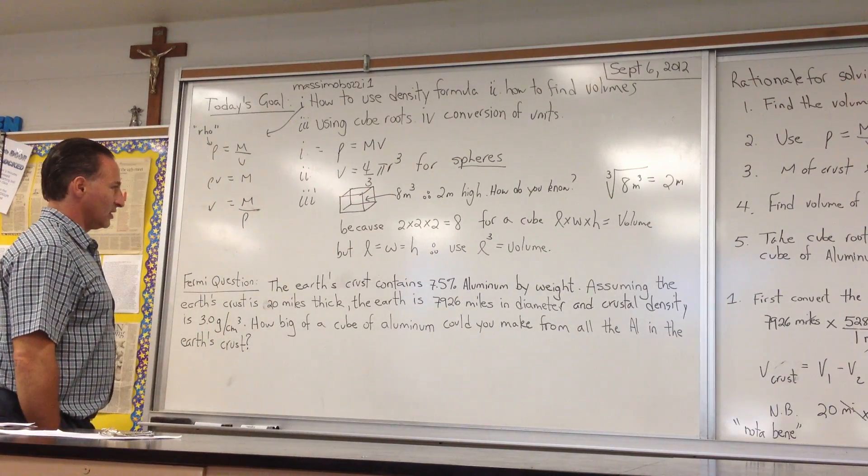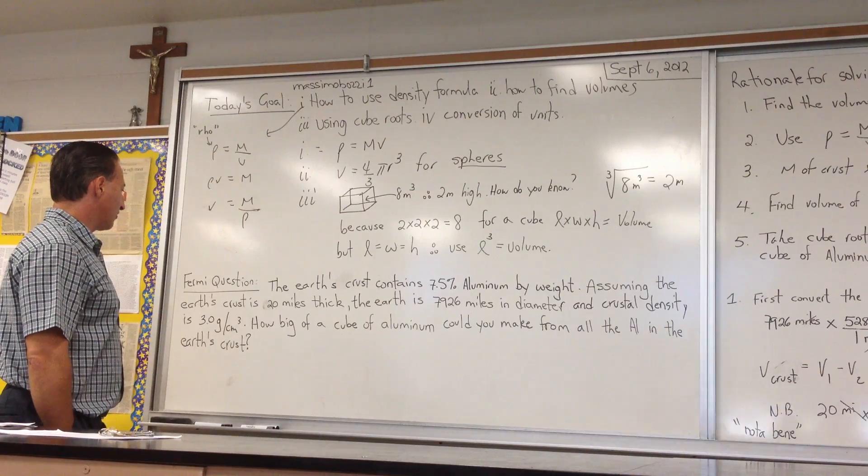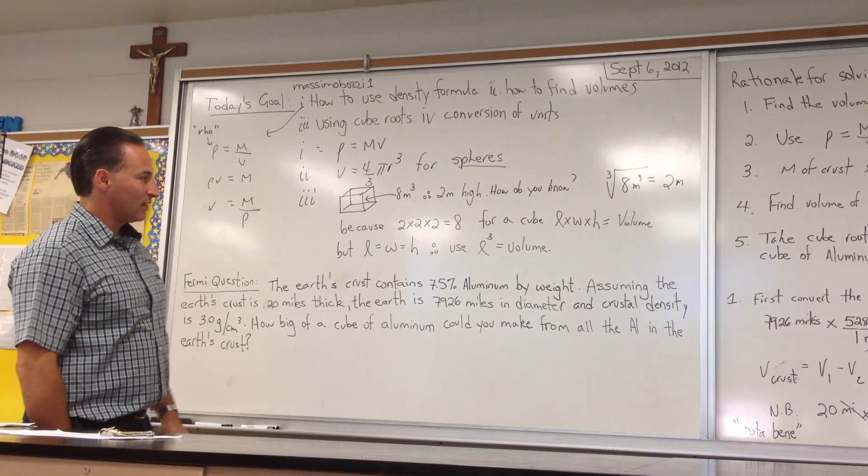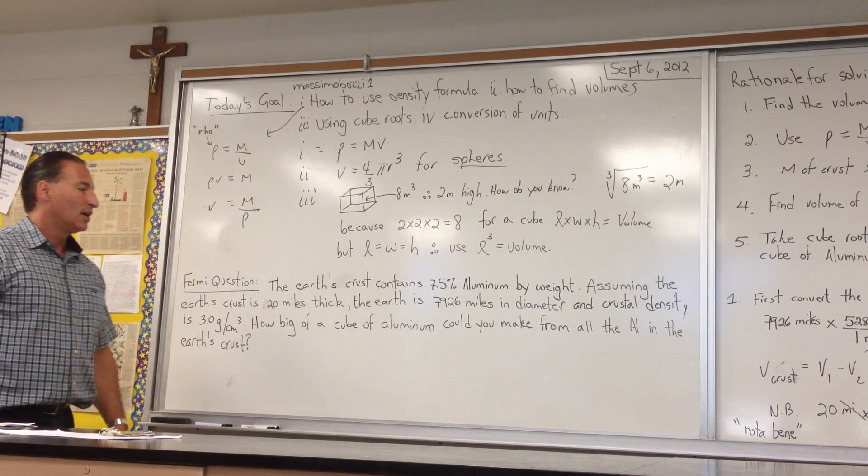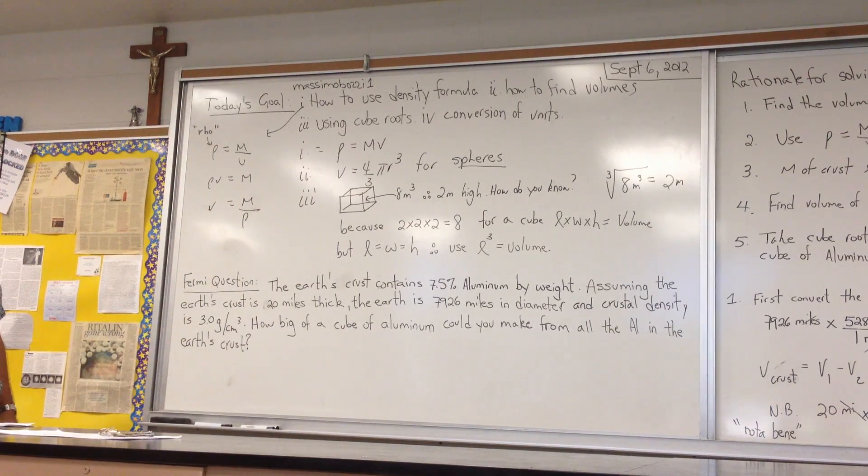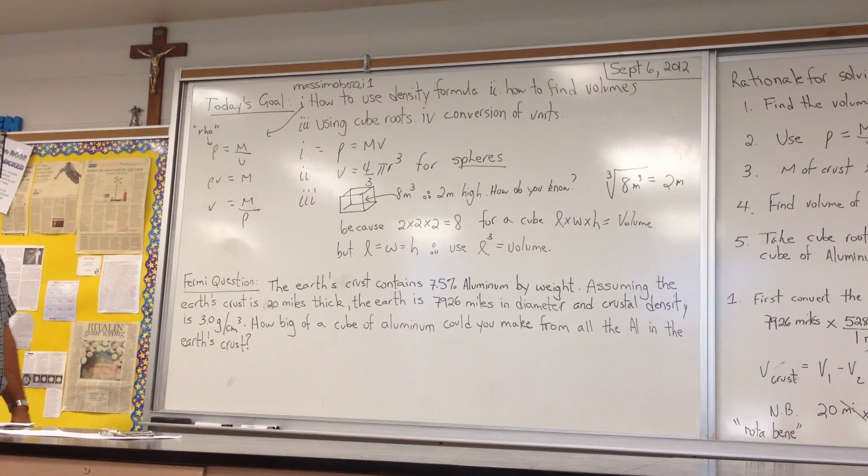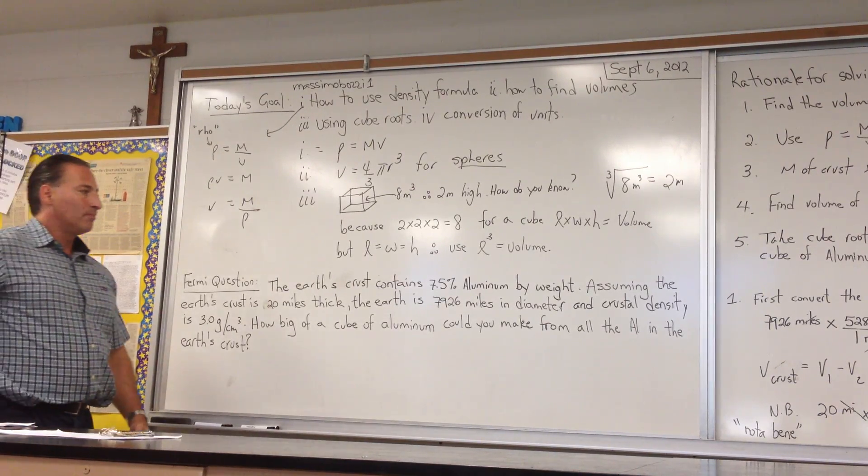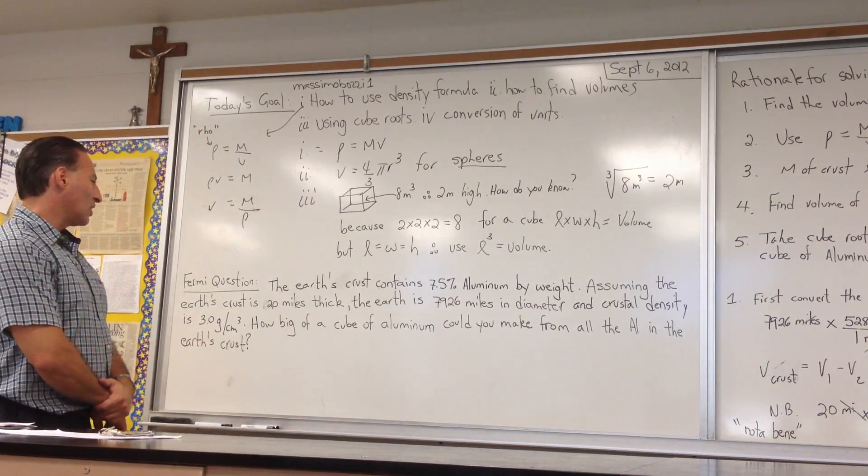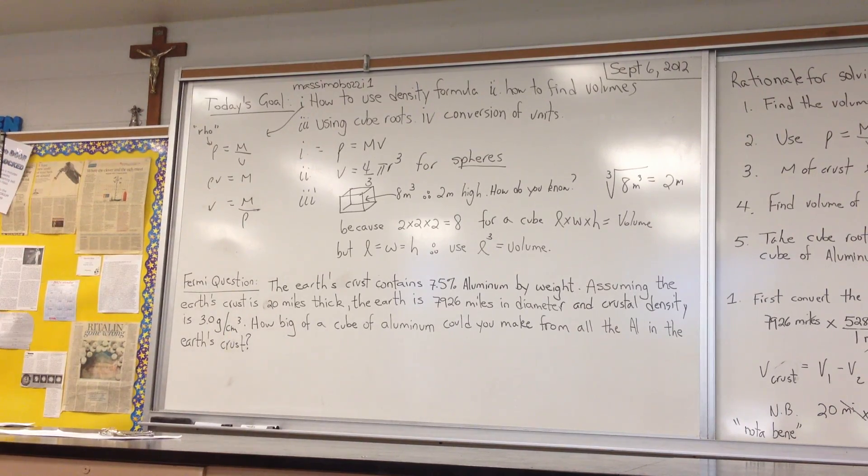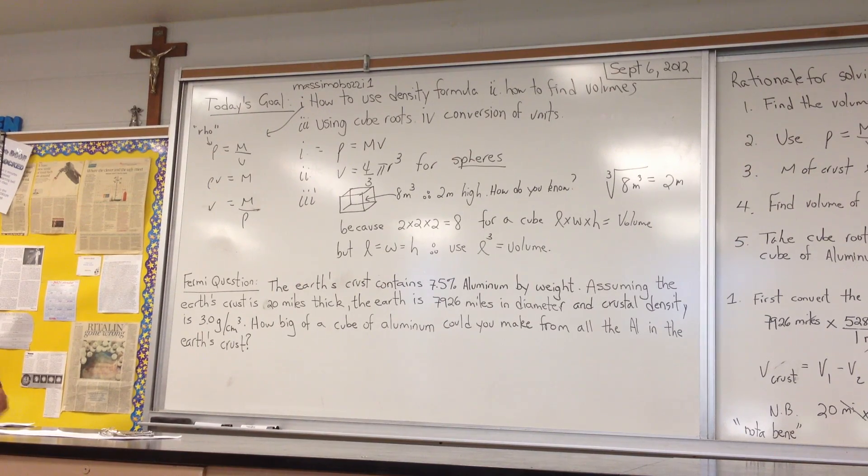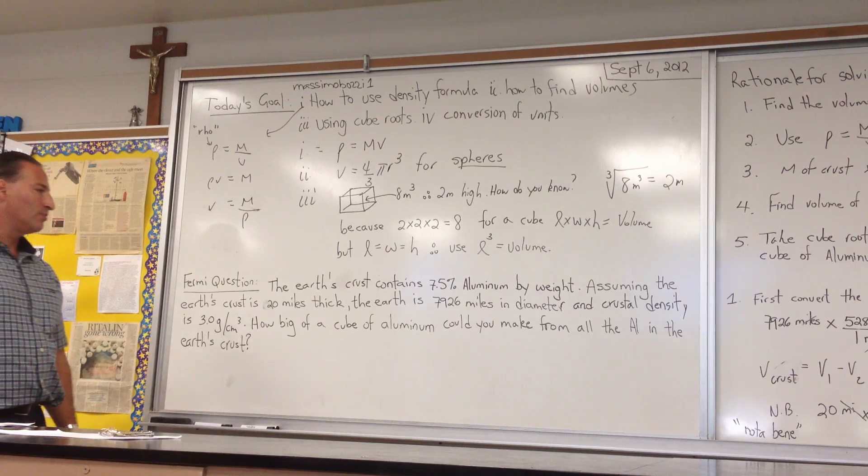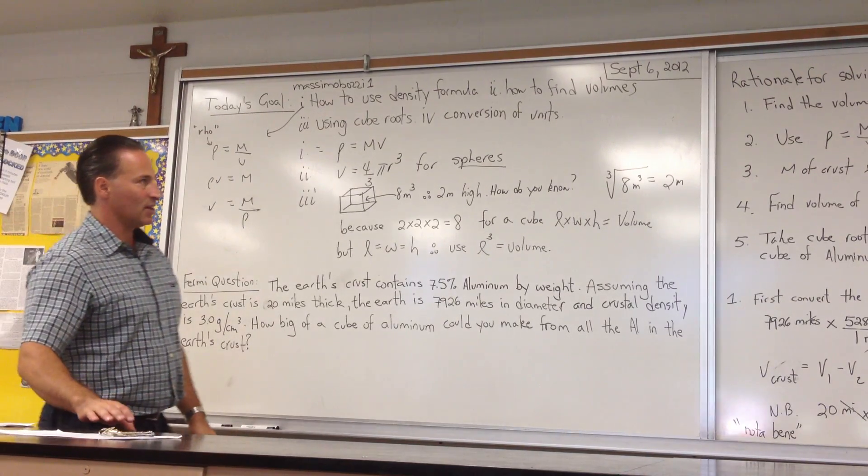So let's start with the Fermi question, named after Dr. Enrico Fermi, because of all the interesting questions he used to ask his students to get them to think analytically and mathematically. The Earth's crust contains 7.5% aluminum by weight. Assuming the Earth's crust is 20 miles thick, the Earth is 7,926 miles in diameter, and the crustal density is 3.0 grams per centimeter cubed, how big of a cube of aluminum could you make from all the aluminum in the Earth's crust?